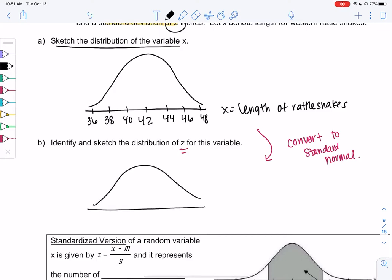So if we want to identify and sketch the distribution of z for this variable, z is always the same. Zero goes in the middle, we go 1, 2, 3. Negative 1, negative 2, negative 3. And that's the z curve. It's always the same.